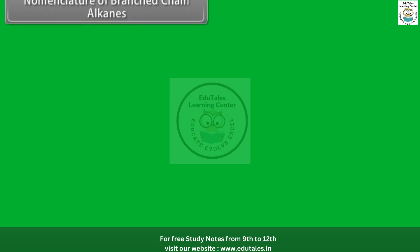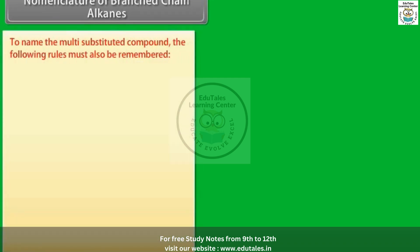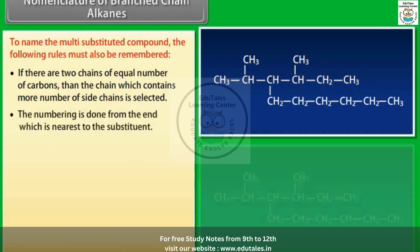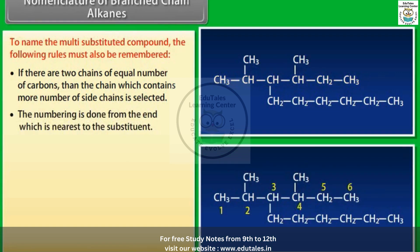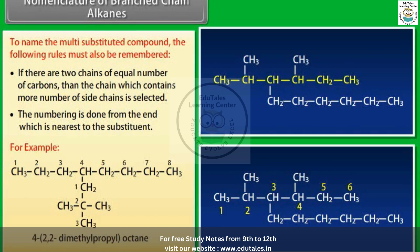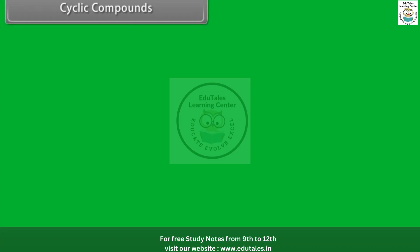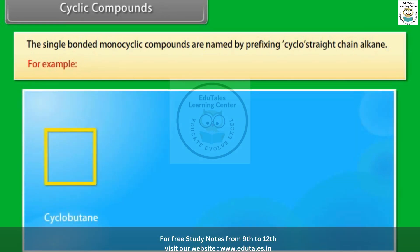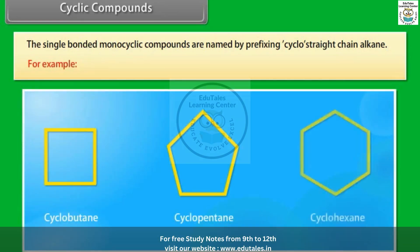To name multi-substituted compounds, if there are two chains with equal numbers of carbons, the chain containing more side chains is selected. Numbering is done from the end nearest to the substituent. For example, the IUPAC name of the given compound is 4-(2,2-dimethylpropyl)octane. Cyclic compounds: Single-bonded monocyclic compounds are named by prefixing cyclo to the straight-chain alkane name, for example cyclobutane, cyclopentane, cyclohexane.